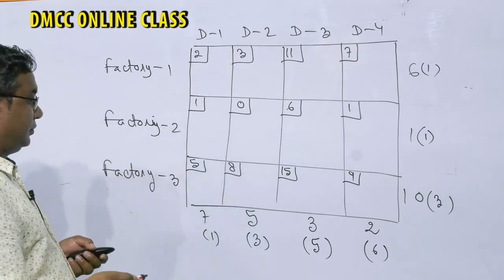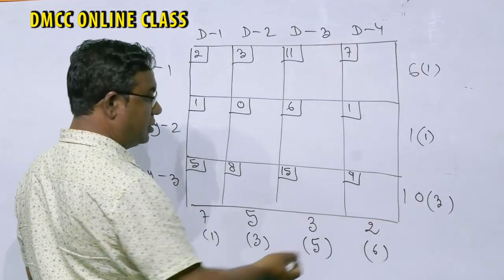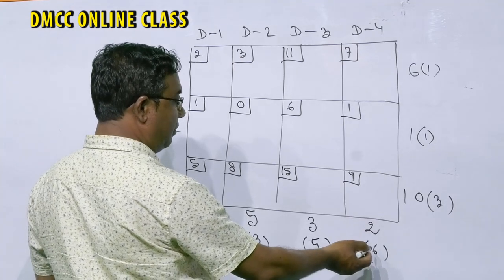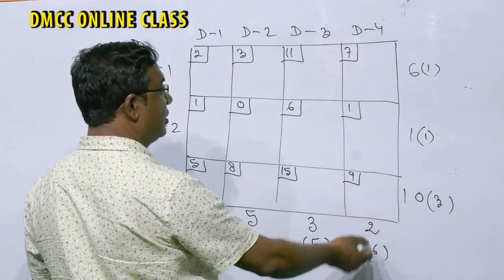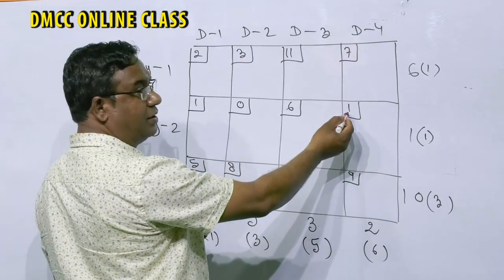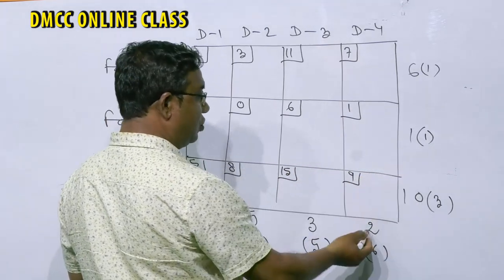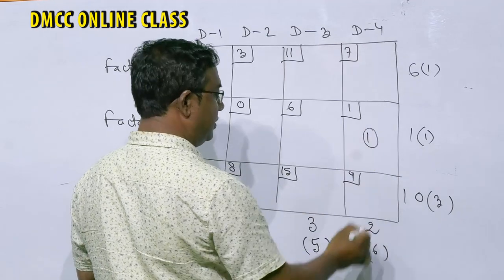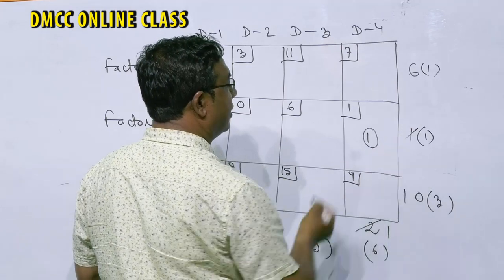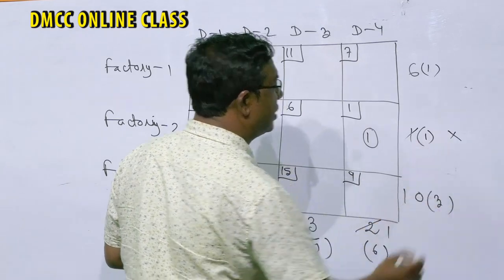Look at the differences and choose the greatest one — that is 6 in column four. Allocate to the lowest cost cell in that column: the cost is 1 in row two. The supply of source two is 1 and demand of destination four is 2, so we allocate 1. Source two is now exhausted — cross it out.